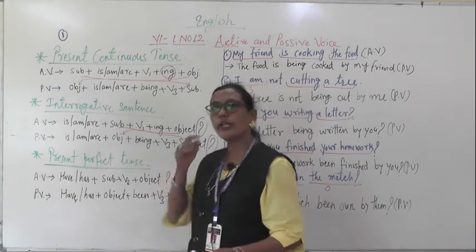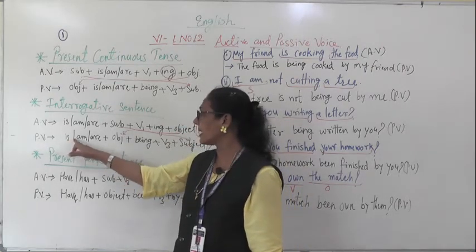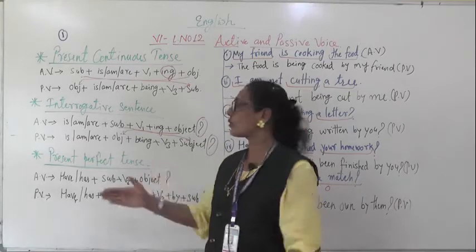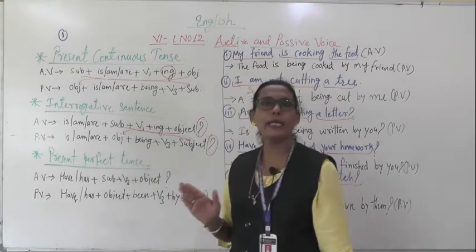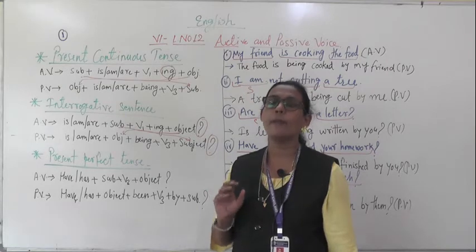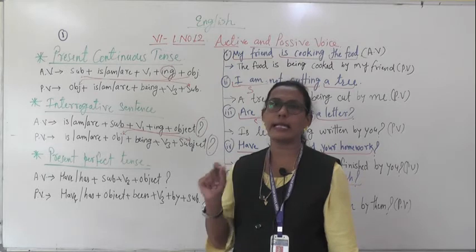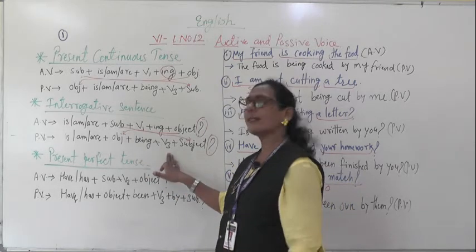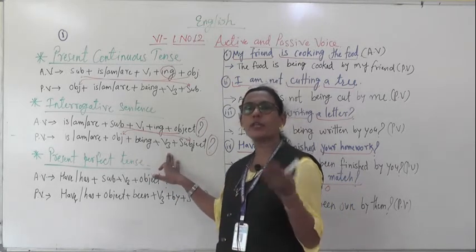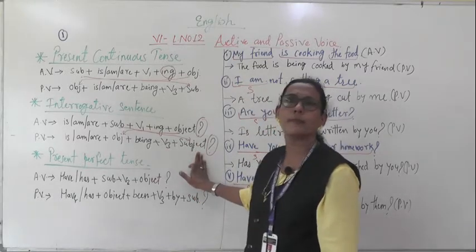In the passive interrogative, the helping verb must still come first. The structure is: is/am/are + object + being + V3 + by + subject. 'Being' always comes when the sentence is in continuous tense, that is when ING form is there. Being + V3 form, because in passive voice V3 always comes.